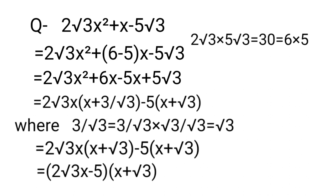We factor as 2√3x(x + 3/√3) - 5(x + √3), where 3/√3 = 3/√3 × √3/√3 = √3 by rationalizing.